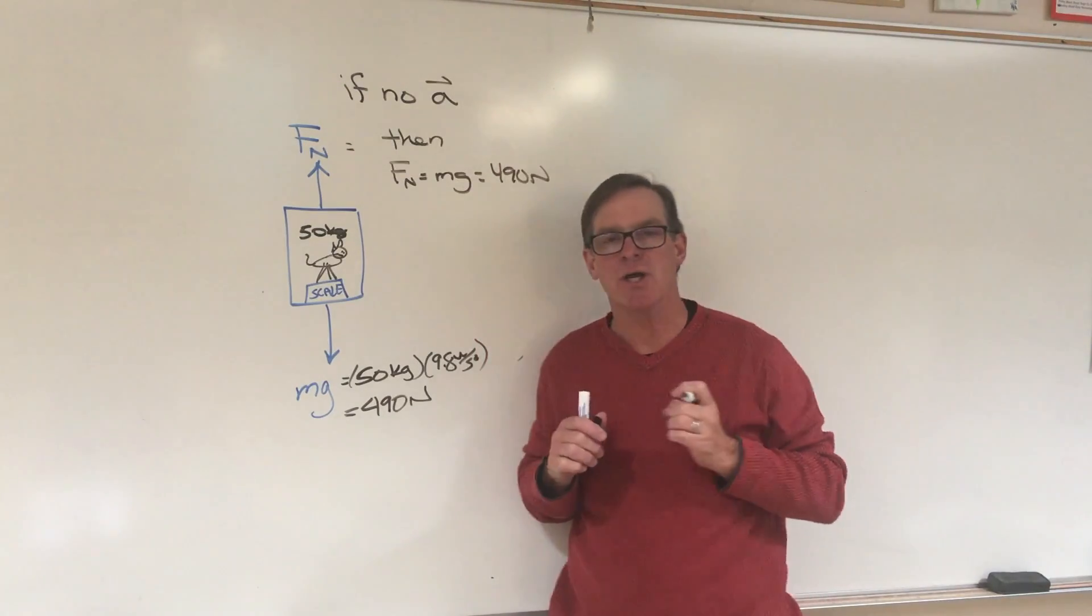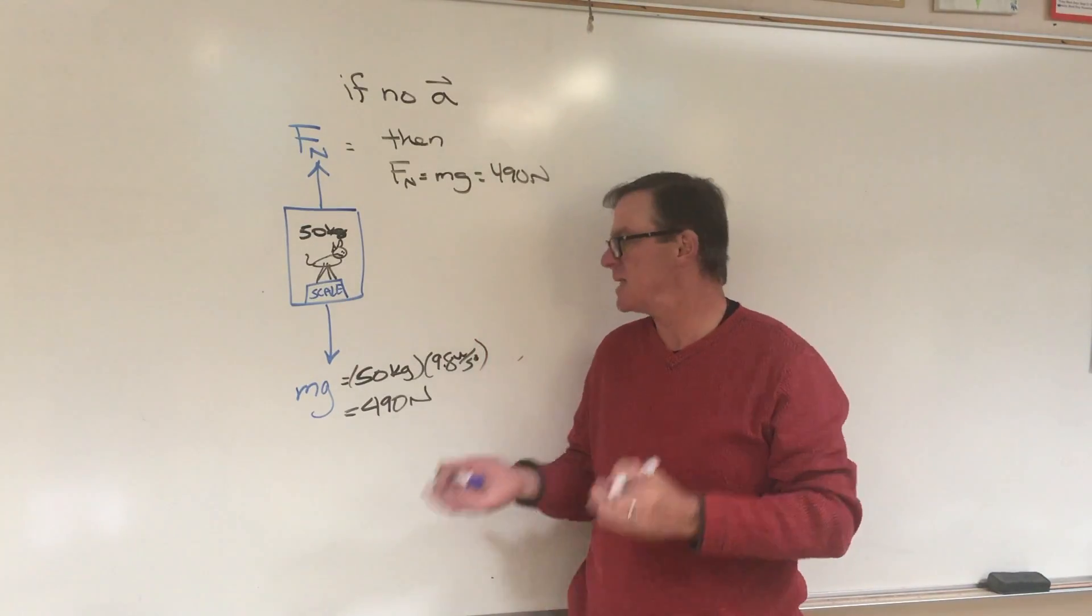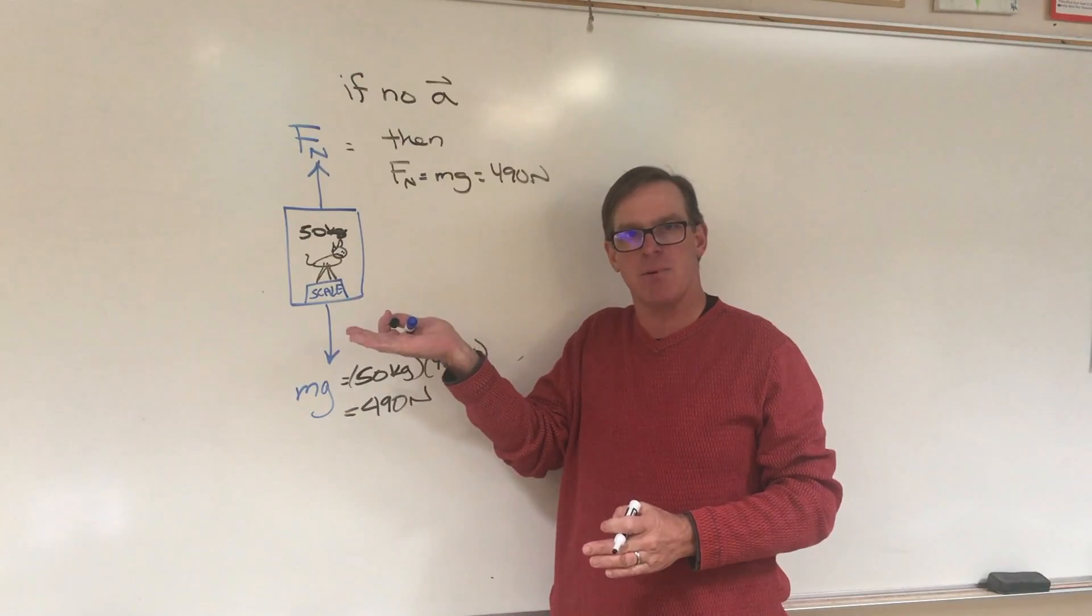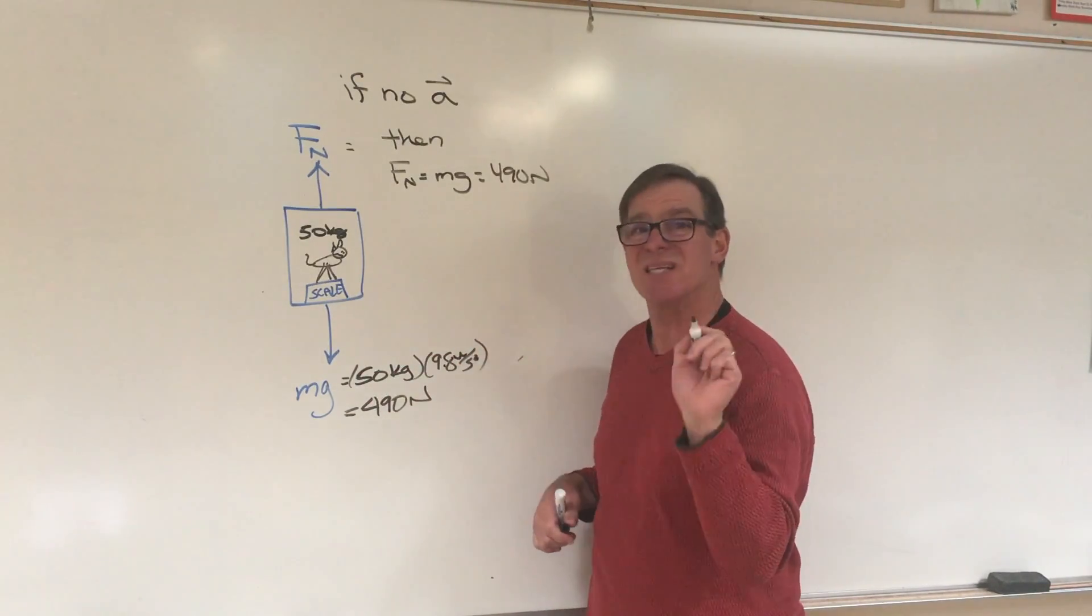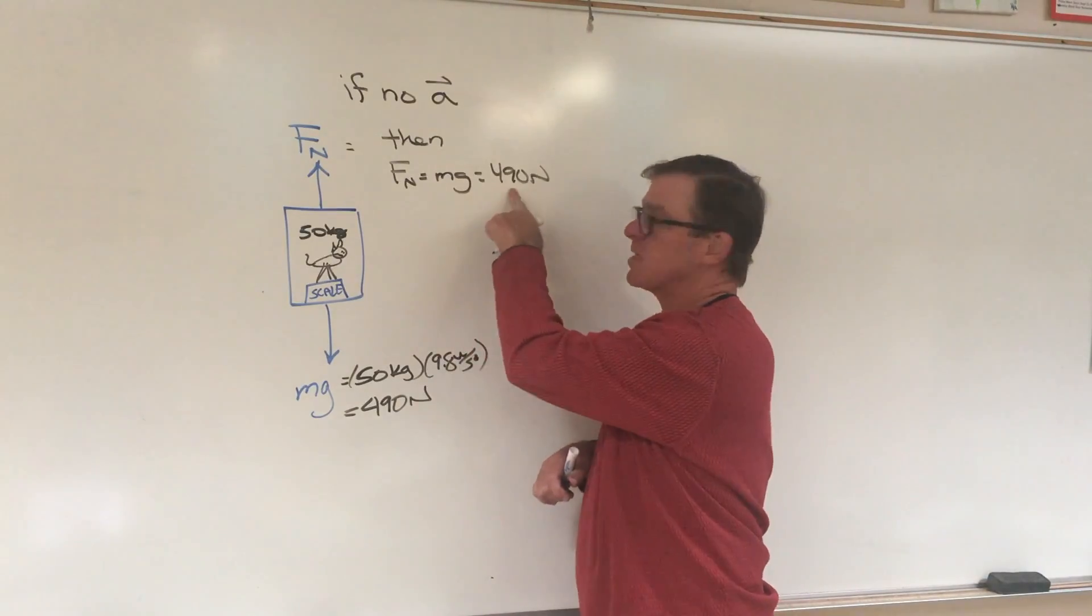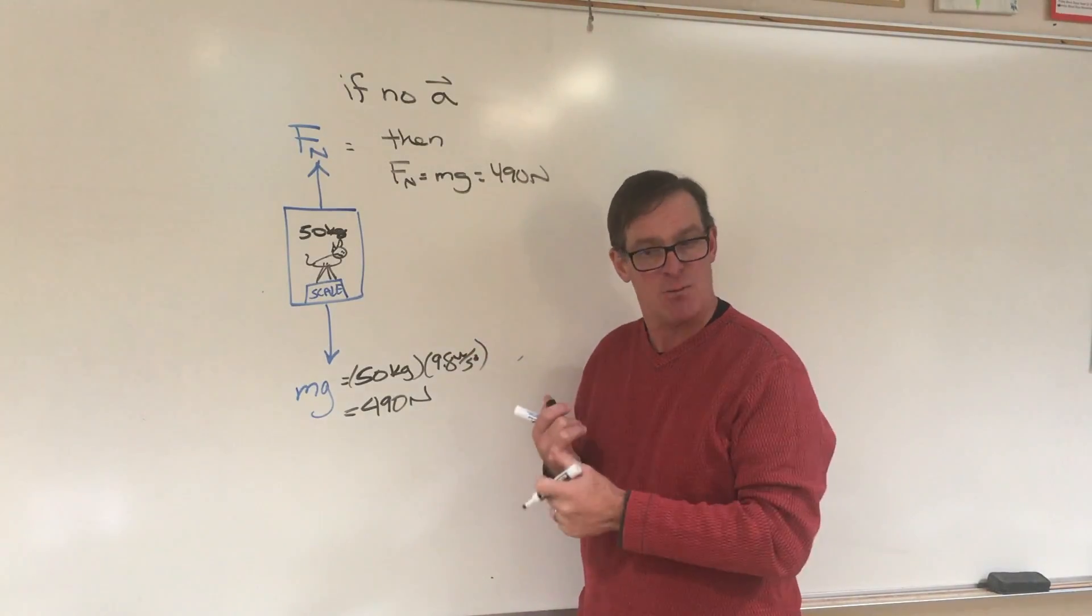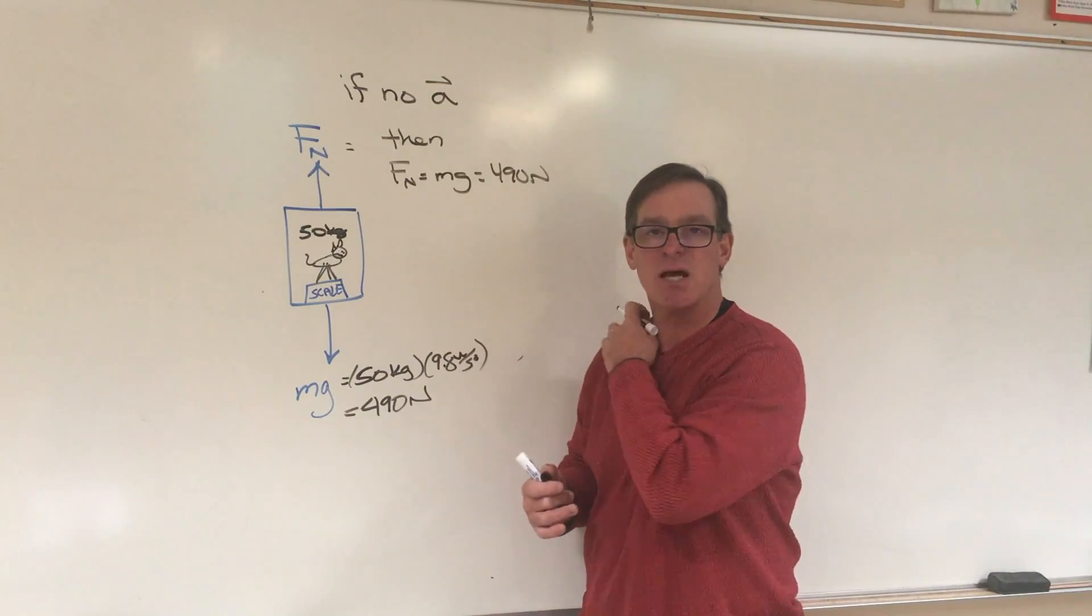A quick word: what the scale reads is how hard it pushes up on the dog. And so when the problem asks what is the scale reading, it's going to be 490 if the dog is either at rest or moving at a constant velocity.